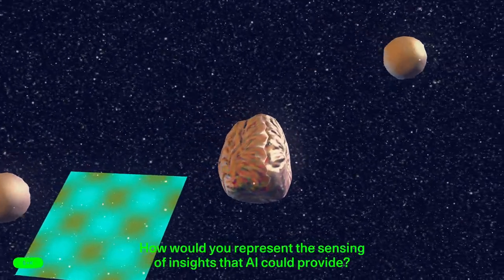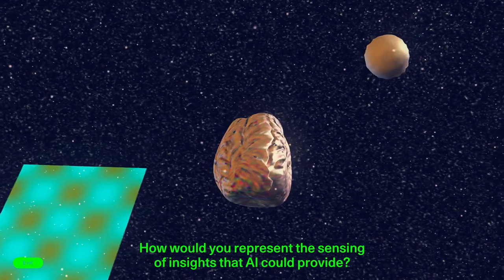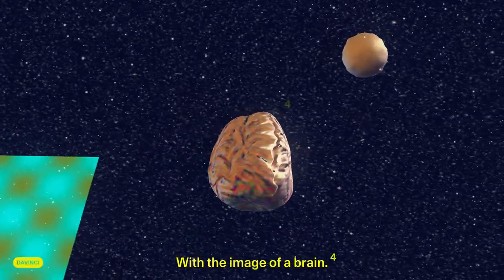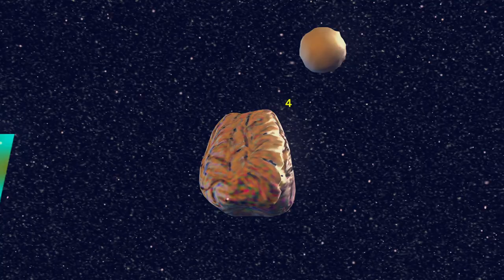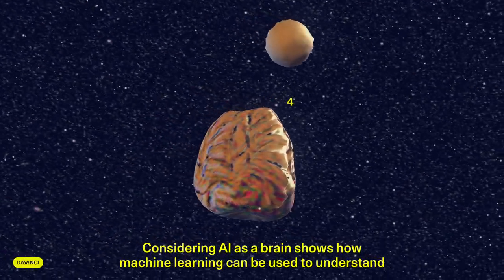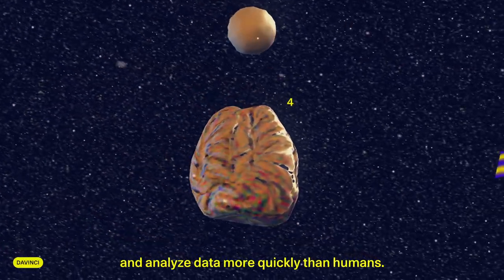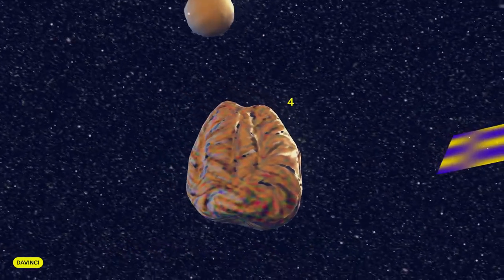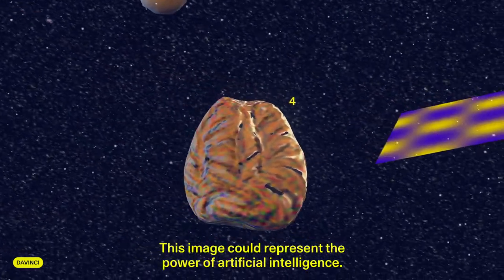How would you represent the sensing of insights that AI could provide? With the image of a brain. Why? Considering AI as a brain shows how machine learning can be used to understand and analyze data more quickly than humans. This image could represent the power of artificial intelligence.